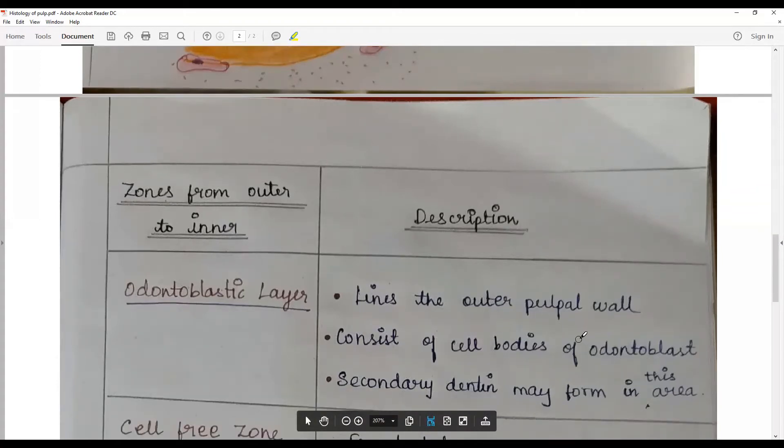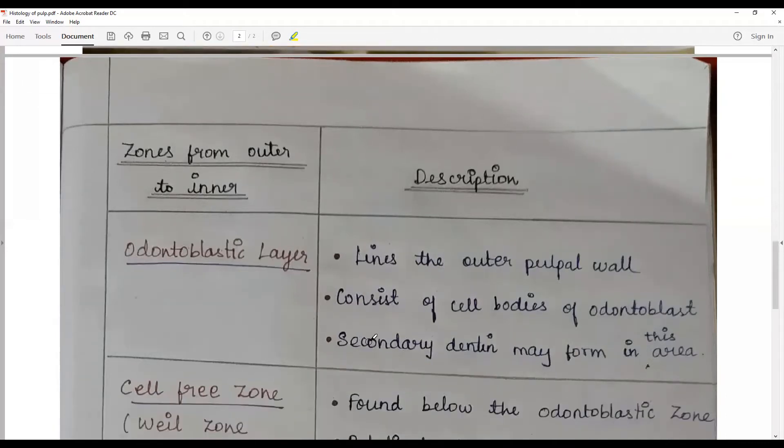From this odontoblast, secondary dentin formation, pre-dentin, all are associated with this. The newly formed dentinoid matrix is associated with this odontoblastic layer.